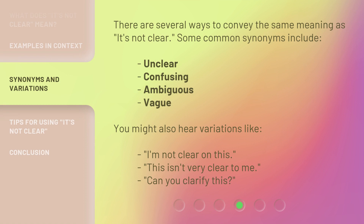There are several ways to convey the same meaning as 'it's not clear.' Some common synonyms include: unclear, confusing, ambiguous, vague. You might also hear variations like, 'I'm not clear on this,' 'This isn't very clear to me,' or 'Can you clarify this?'